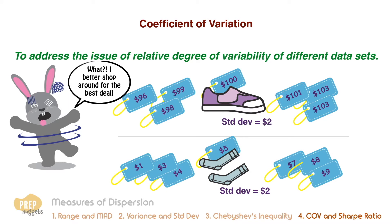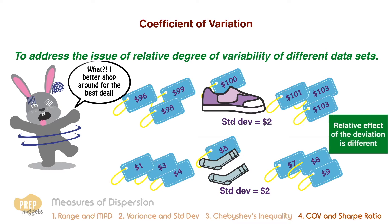Would you be more inclined to shop around to get the best price for socks? Probably so. The lesson here is that even though both products have the same standard deviation of $2, the relative effect of the deviation is different for both.